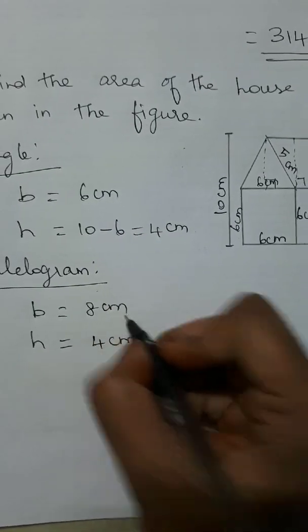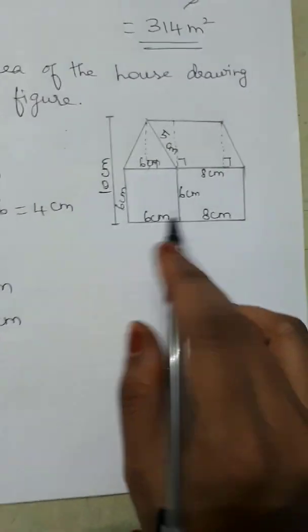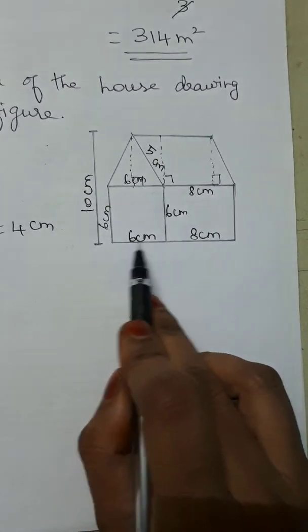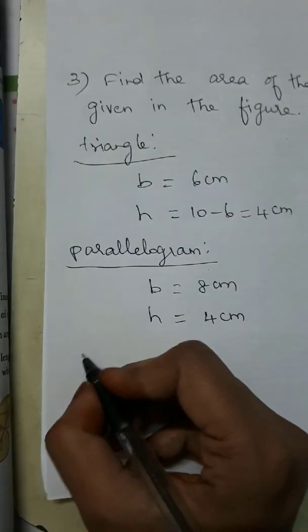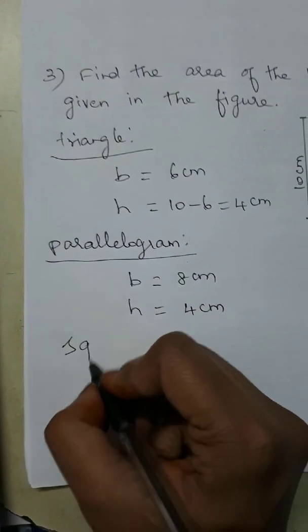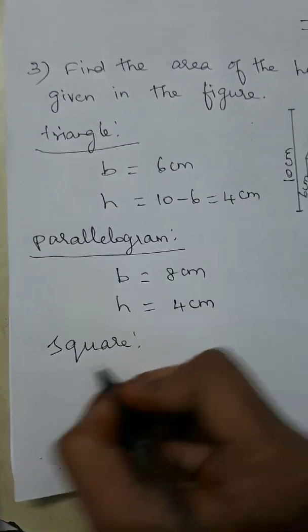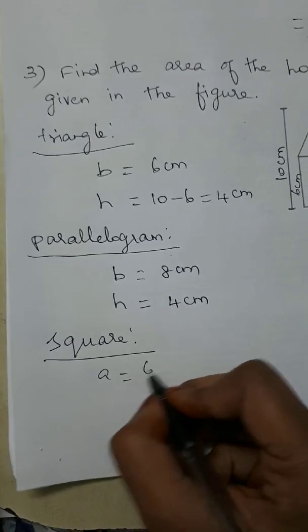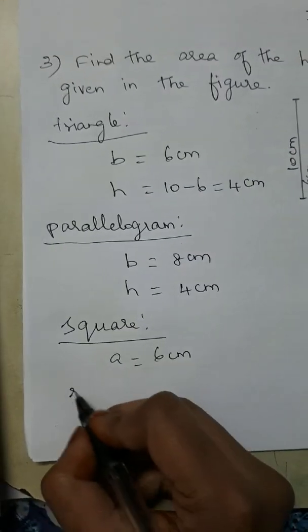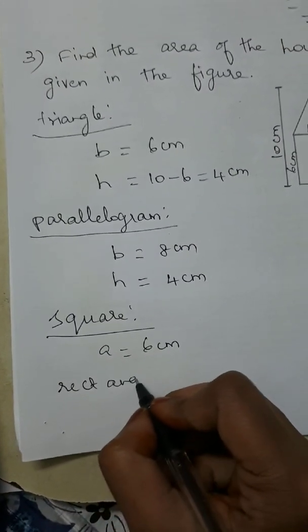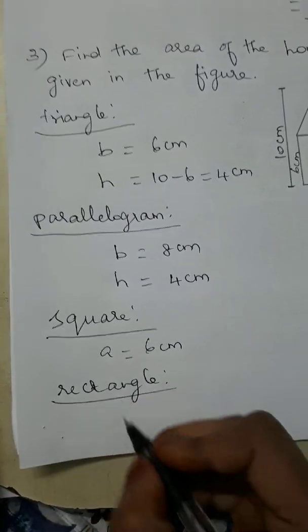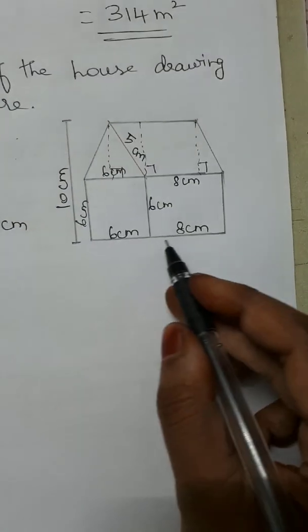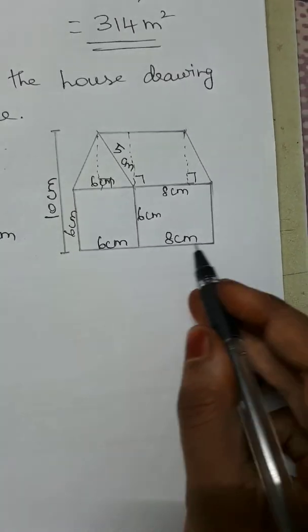For the square: side a = 6 cm. For the rectangle: length L = 8 cm, breadth b = 6 cm. For the triangle: base b = 6 cm and height h = 4 cm.